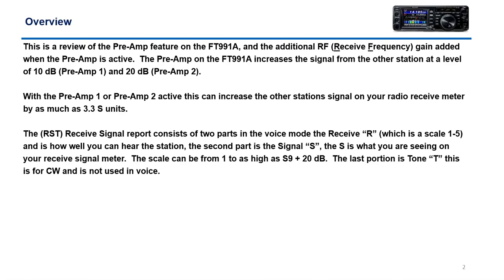The second part is the signal report, which is typically S1, S3, S9, S9 plus 10 dB, and so forth. That's what you're seeing on the meter. But when you're giving a signal report, you have to factor in whether you have preamp 1 or preamp 2 on. If you have preamp 1 on with 10 dB gain, that's going to add about 1.67 S units to their reading. If you have preamp 2 turned on, that will increase their signal by as much as 3.3 S units. You have to be careful about that. The signal report is important, but I think more importantly is how well you're hearing them acoustically, because there are a lot of variables — propagation and so forth.